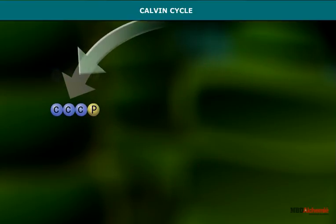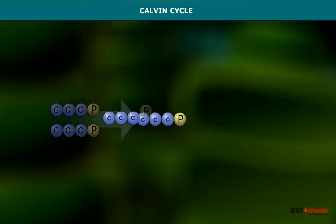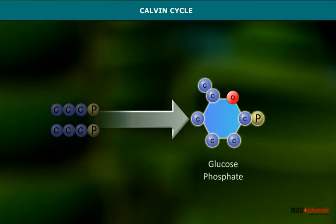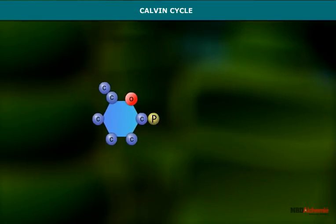The remaining glyceraldehyde-3-phosphate is then used to make glucose, fatty acids, or glycerol.